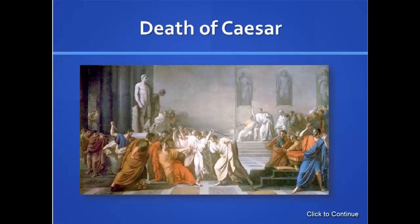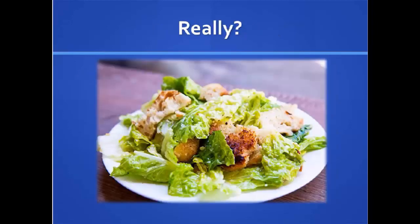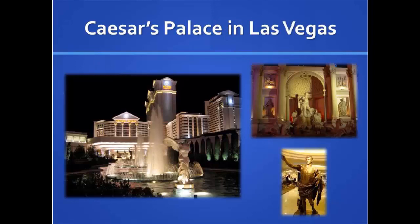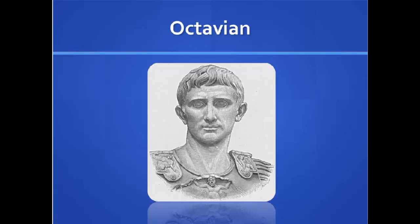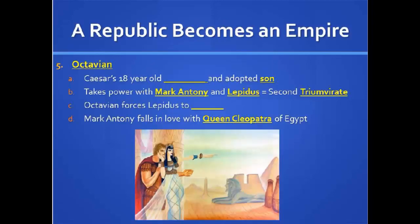Here's an image illustrating the murder of Julius Caesar on the Roman floor. Things remembered with Julius Caesar include Caesar salads and Caesar's Palace in Las Vegas. But after Caesar, along came Octavian — Caesar's 18-year-old nephew and adopted son. He takes power with Mark Antony and Lepidus and creates the second triumvirate. Octavian forces Lepidus to retire eventually, and Mark Antony falls in love with Queen Cleopatra of Egypt.